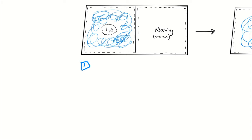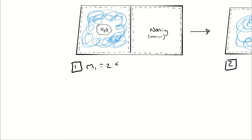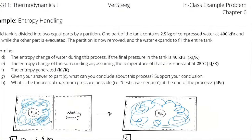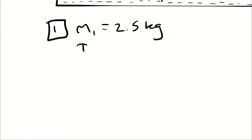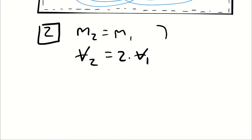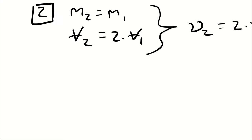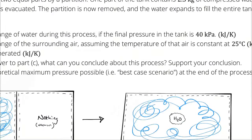I'm going to define my system as the mass of water. At the beginning of the process, state one, the initial temperature and pressure are 400 kilopascals and 60 degrees Celsius. At state two, the mass hasn't changed but the total volume is doubled because the problem specified two equal partitions, so the specific volume doubles. The pressure at the end of the process is 40 kilopascals.